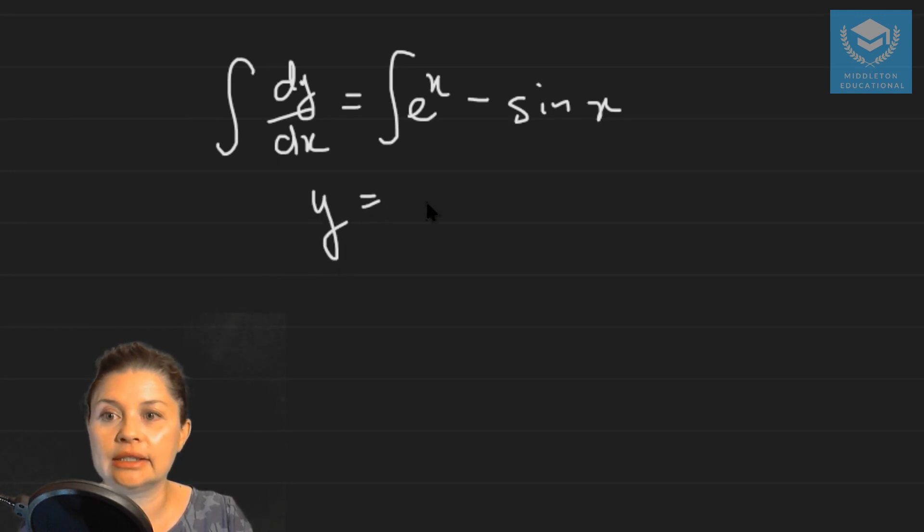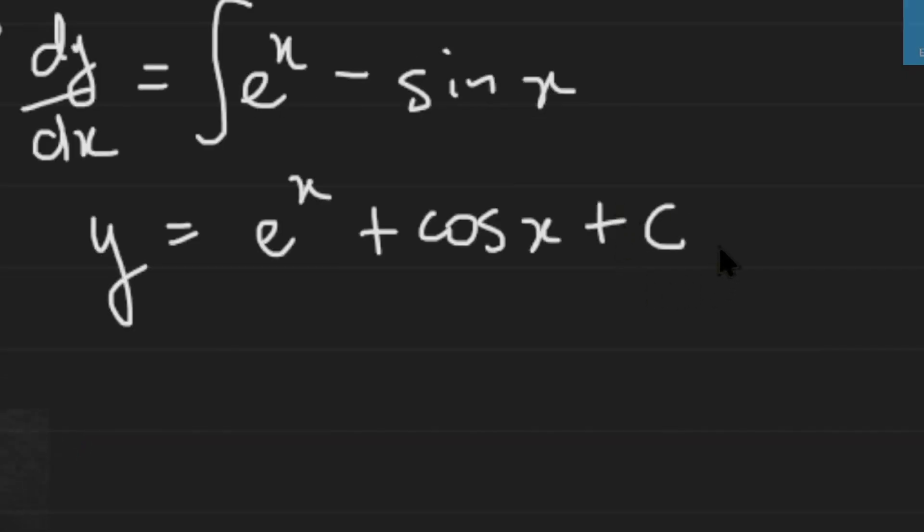We get y equals e^x plus cos x plus C. This C value here means that there's a host of solutions for this equation. We call this our general solution because we don't know what that C is and it can be anything, and that depends on initial conditions.